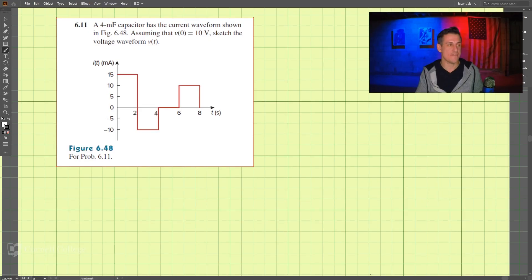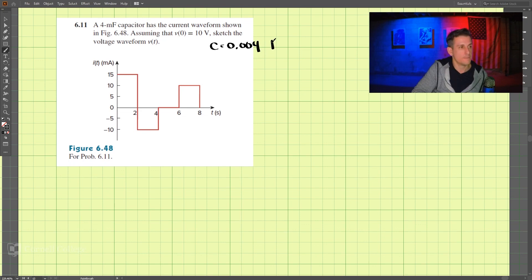This is problem 6.11, and what we have here is a 4 millifarad capacitor, 4 milla. So that means that capacitance C is 0.004 farads.